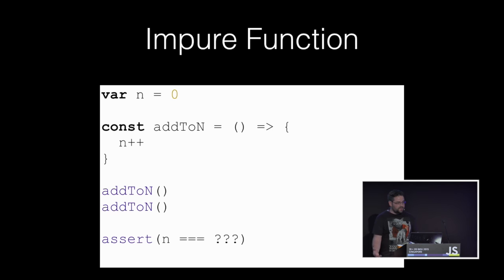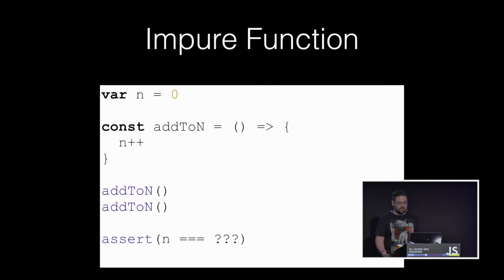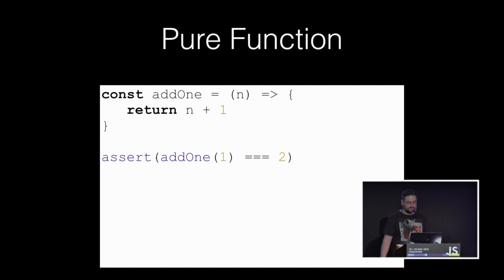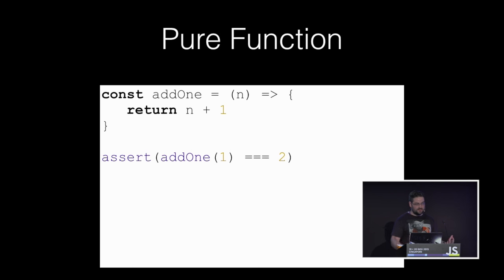Functions have a concept of purity in functional programming. A function is impure if it causes state to change outside of the scope of itself — also referred to as side effects. Impure functions are complex because there is complecting of values in time. Conversely, a pure function only takes arguments and returns values and does not modify any outer scope state. Pure functions are easy to test in isolation because you only need to provide arguments — there's no outer scope state to set up and check. Pure functions don't complect time with values, so they are simple.